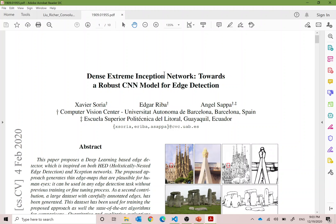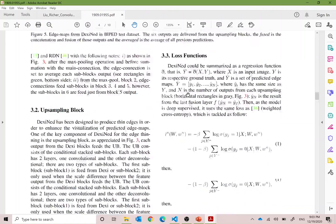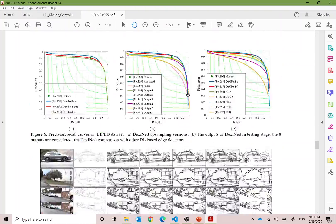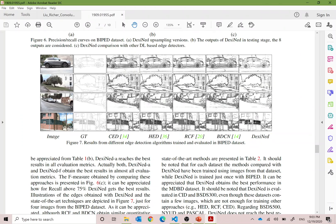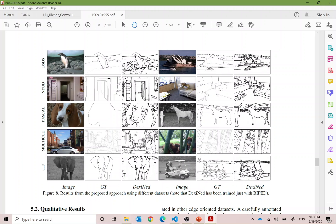And in this paper, which is a WACV 2020 paper, a dense extreme inception network toward robust CNN model for edge detection. In this one, we can see the results. You can see the original images ground truth and the results which are very nice and which are very close to ground truths.